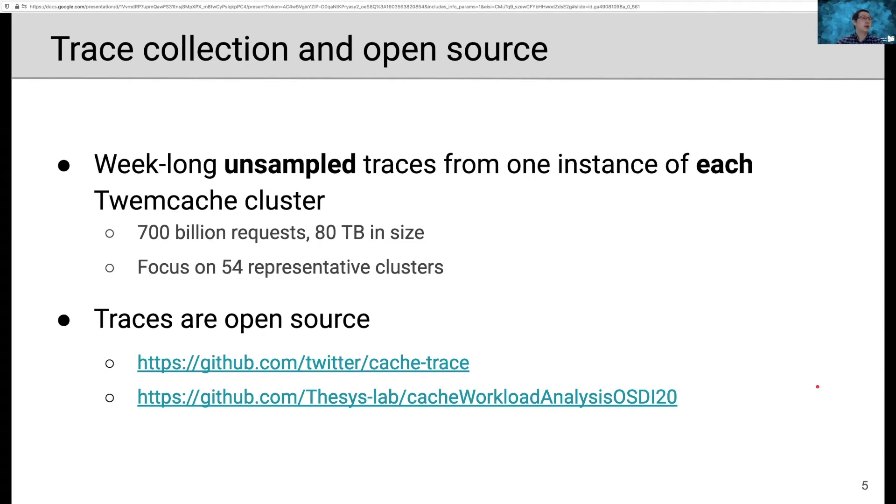We collected week-long unsampled traces from one instance of each Twemcache cluster. It consists of 700 billion requests and 80 terabytes in size. In today's talk, I'm going to focus on the 54 most representative cache clusters. The traces are open source at the following URL.